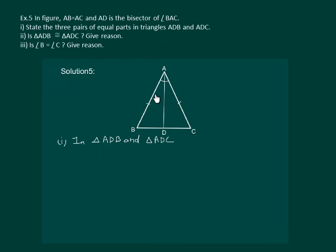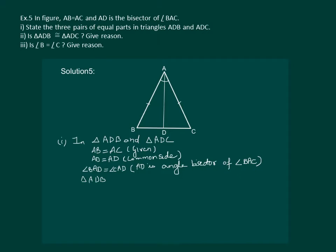Clearly in the two triangles, AB = AC which is given, AD = AD as it is the common side, and angle BAD = angle CAD as AD is given to be the angle bisector. From this information, triangle ADB is congruent to triangle ADC.